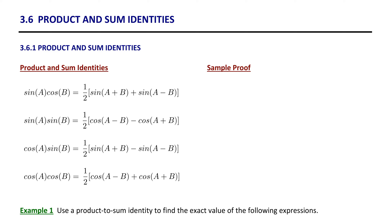We have finally arrived at the last section, 3.6, where we will study product and sum identities. The identities are named product and sum identities because we are going from a product between trig functions to a sum or difference between trig functions. While it's not necessary that you memorize these identities, you do need to know how to use them. These will be very useful when you get to calculus and need to break up an integrand.